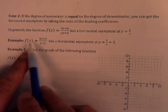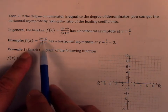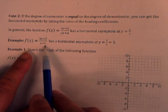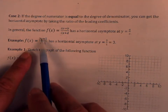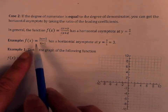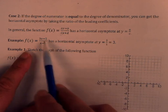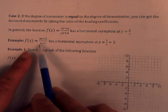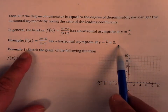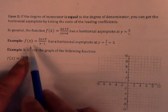For example, f of x equals 3x plus 5 over x minus 1. Degree 1 over degree 1 — you take the ratio of the leading coefficients: 3 over 1 gives you 3. So y equals 3 is the horizontal asymptote for this example.